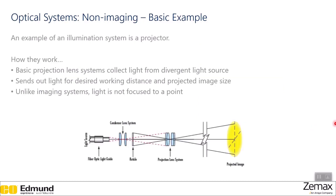For our illumination non-imaging example, we have a projector. A basic projection lens system collects light from a diverging light source and sends out light for a desired working distance and projected image size. However, unlike imaging systems, light is not focused to a point. Looking at the schematic, the projection lens system receives rays from the divergent light source, and the image is projected onto a projection screen or image plane.